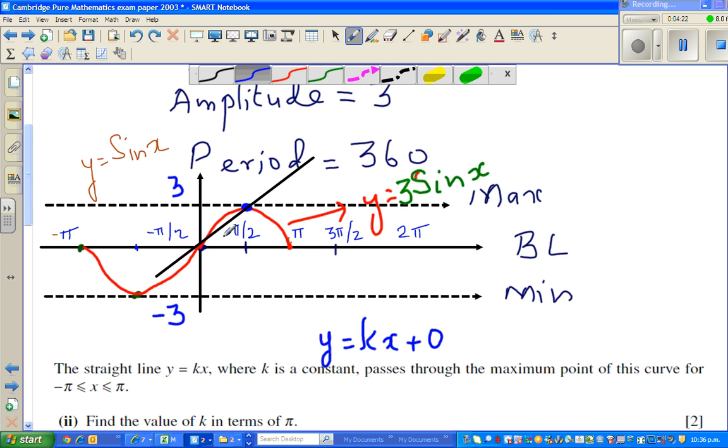Now to find the gradient, you need to know the rise and the run. So what's the rise? I'm talking about this line, from here to here, from left to right. I can see the rise is from 0 to 3, so the rise is 3. And the run is pi by 2.